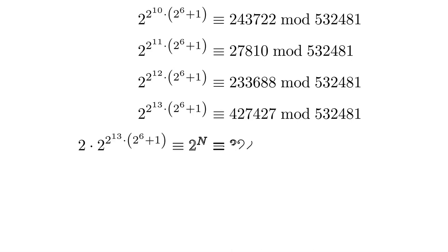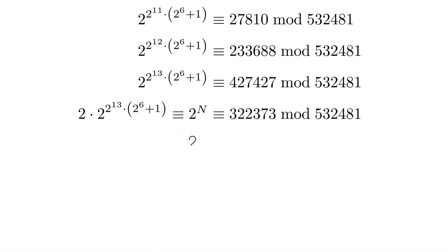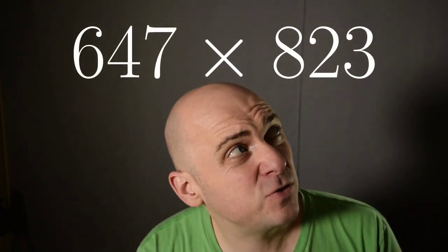And eventually I'll end up with 2 to the 2 to the 13th times 2 to the 6 plus 1. I'll multiply that by 2, and that gives me 2 to the n. So 2 to the n is not congruent to 2 modulo n. And consequently, n is not prime. And in fact, we can see that it factors as 647 times 823.